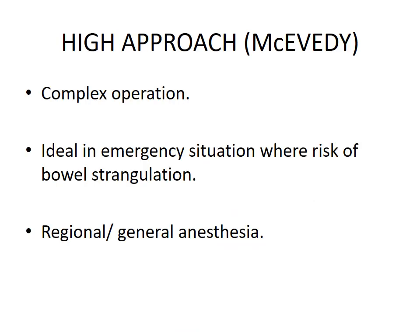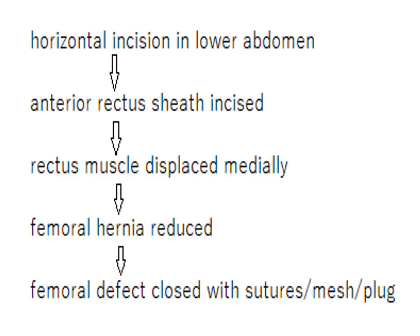The high approach — McEvedy: a complex operation, ideal in emergency situations where there is risk of bowel strangulation. Regional or general anesthesia is given. An inguinal incision in the lower abdomen is made, the anterior rectus sheath is incised, and the rectus muscle is displaced medially. The femoral hernia is reduced, and the femoral defect is closed with sutures, mesh or plug.